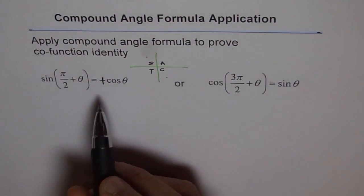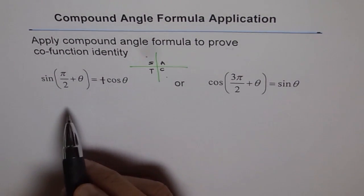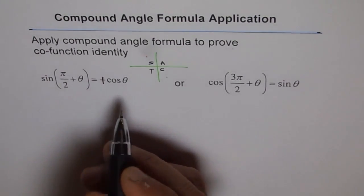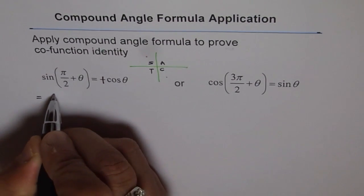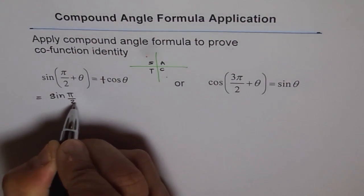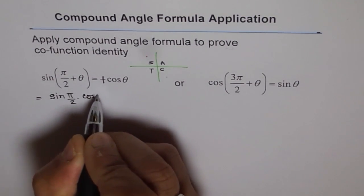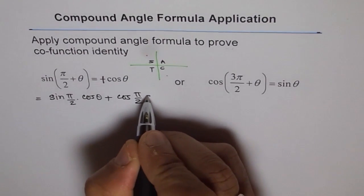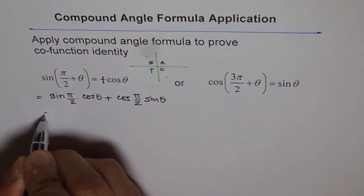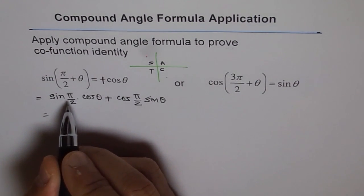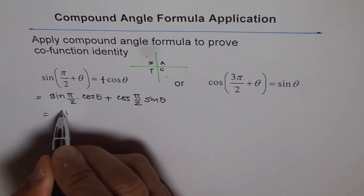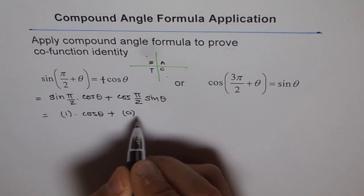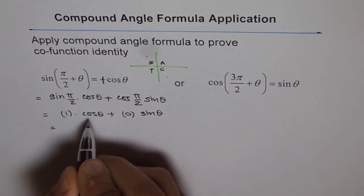Now let us prove this. Since I wrote the original one wrong, let me prove the correct one. We recall the sine A plus B formula: sine A plus B equals sine A cos B plus cos A sin B. So expanding sine of π/2 plus θ, we get sine(π/2) times cos θ plus cos(π/2) times sin θ. Now sine π/2 is 1 and cos π/2 is 0, so we are left with 1 times cos θ plus 0 times sin θ.